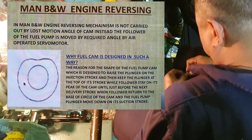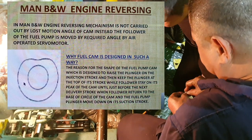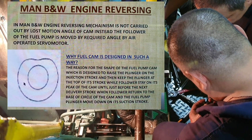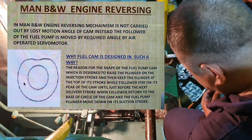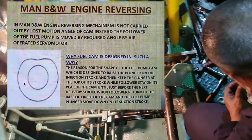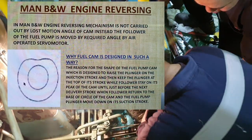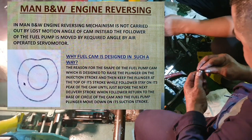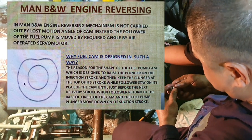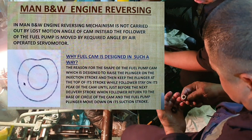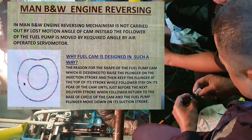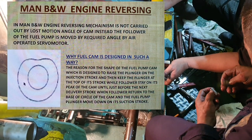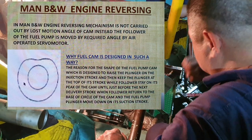Why is the fuel pump designed in such a way? The reason is the shape of the fuel pump cam, which is designed to raise the plunger on the injection stroke and then keep the plunger at the top of each stroke while the follower stays on the peak of the cam until just before it meets the lower stroke. When the follower returns to the base circle of the pump, the fuel pump plunger moves down in its suction stroke.